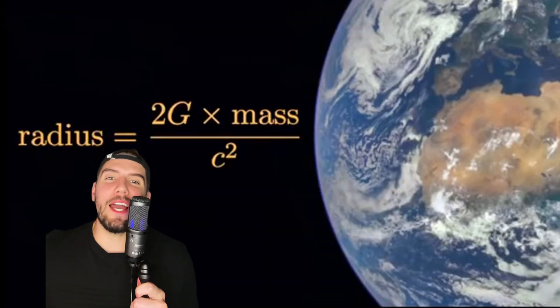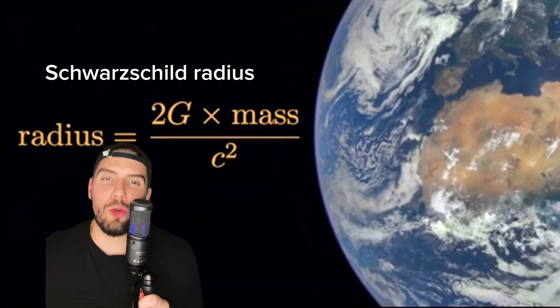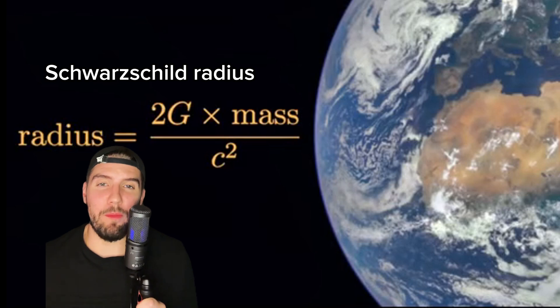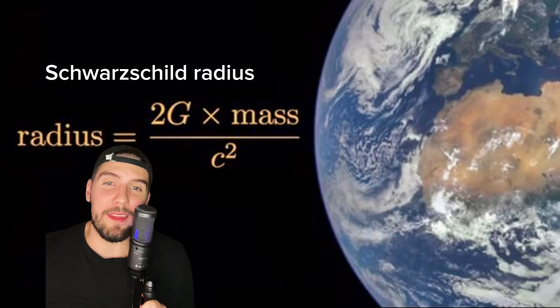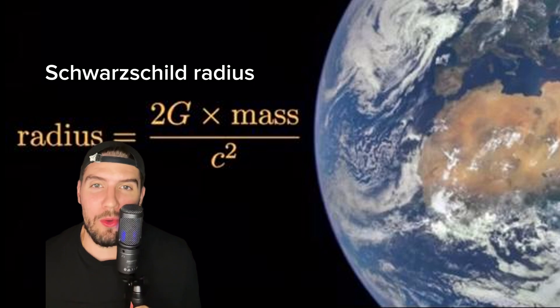So this right here is the black hole equation, also called the Schwarzschild radius. For some given amount of mass, how small of a volume, the radius, do you have to pack that mass into in order to make a black hole?